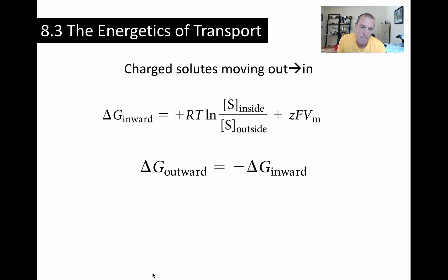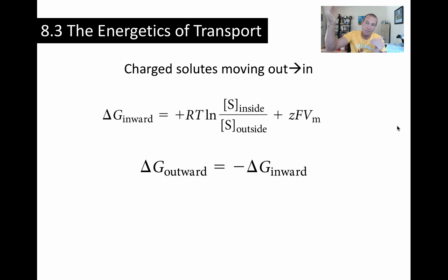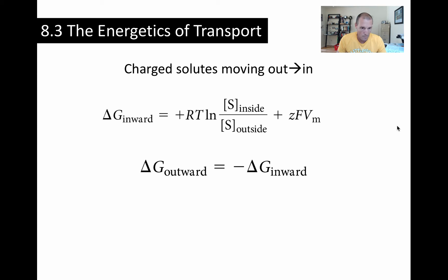The membrane potential Vm will be expressed in volts. For a typical cell, that value is negative because the inside of the cell is maintained at a slightly negative potential due to charges on proteins and ions compared to the outside. So the inside of cells is relatively negative, and this value is often in the negative millivolts range. Once you understand what all these terms are, you can substitute in numbers.